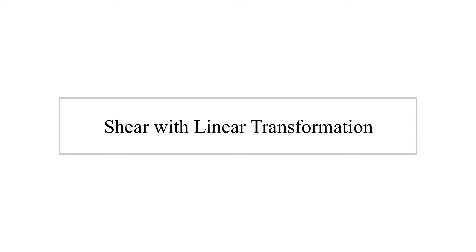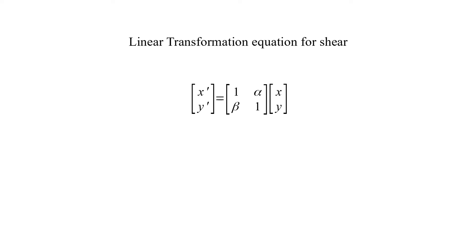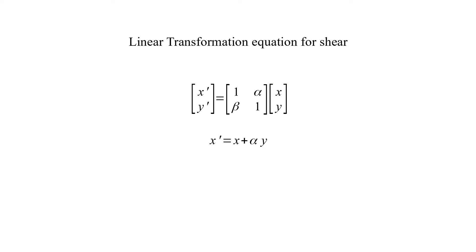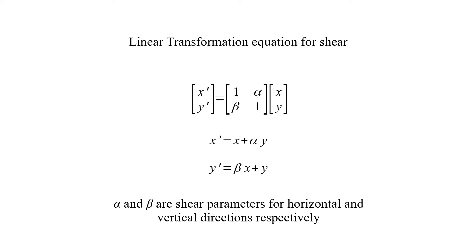Shear with linear transformation. This is the linear transformation equation for shear. The shear matrix multiplies the input coordinate vector to produce the transformed coordinate vector. The transformed x coordinate is equal to x plus alpha times y, and the transformed y coordinate is equal to beta times x plus y. Alpha and beta are shear parameters for horizontal and vertical directions respectively.